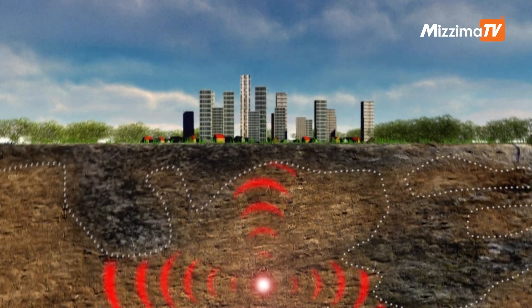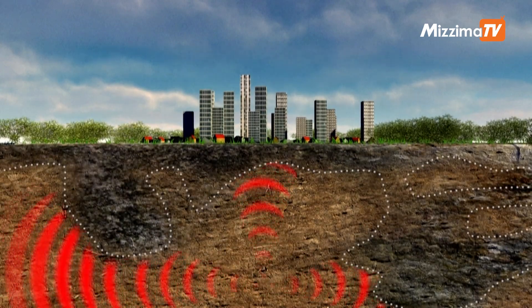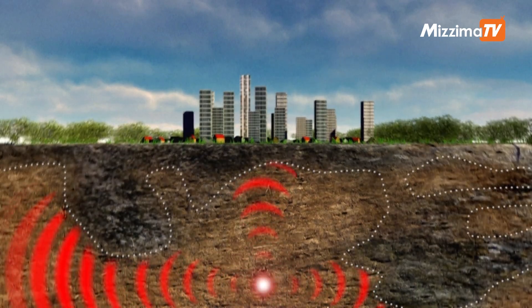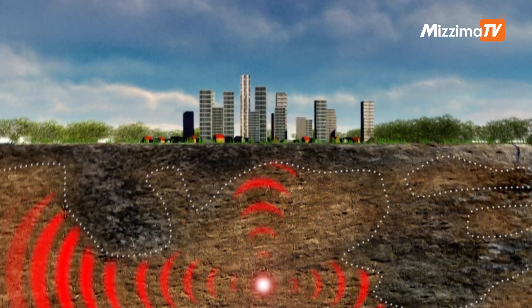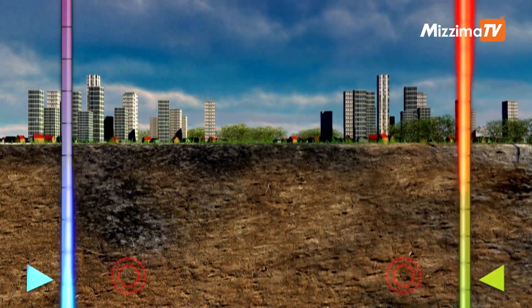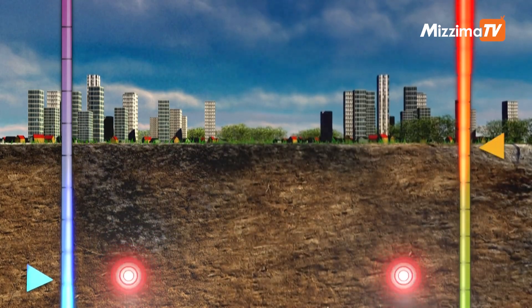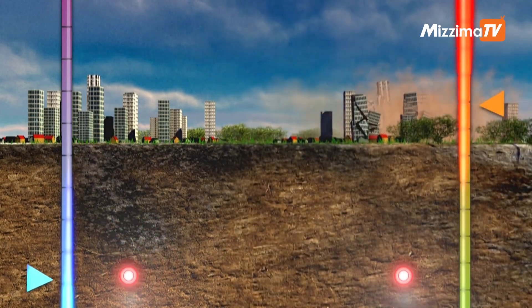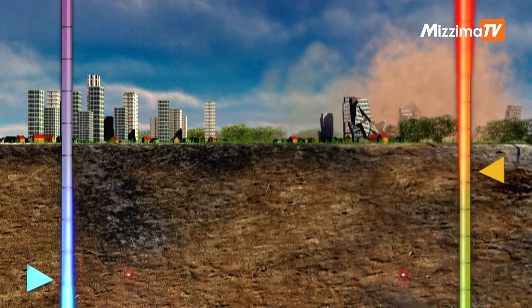The depth of the quake as well as the type of rocks crossed by the seismic waves influence the intensity. For the same quake, the intensity can vary from one place to another. Two quakes of the same magnitude can have different maximum intensities, and vice versa.